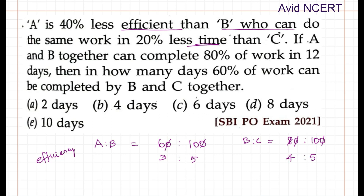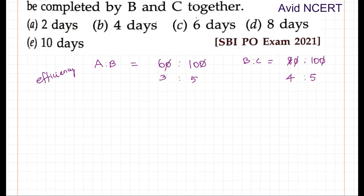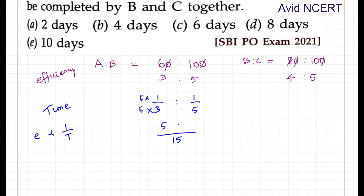Now, since the A to B ratio is in efficiency and the B to C ratio is in time, we need to convert both into the same terms. Since efficiency is inversely proportional to time, we convert the efficiency ratio A to B (3:5) into a time ratio: it becomes 1/3 to 1/5. Taking LCM of 3 and 5, which is 15, we get 5 to 3. So the time ratio A to B is 5 to 3.